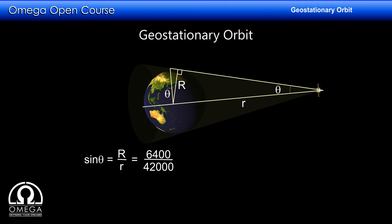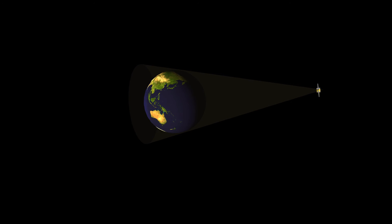The radius of the Earth is around 6400 km and radius of the orbit is 42,000 km. Thus, sin theta is 6400 divided by 42,000, which is approximately 0.15. Therefore, theta is sin inverse of 0.15, which is approximately 8.76 degrees.